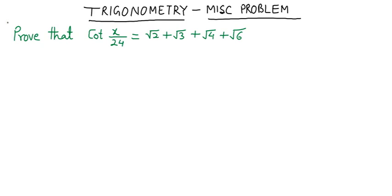The problem is: we have to show that cot(π/24) is equal to √2 + √3 + √4 + √6.